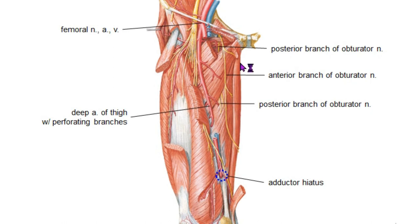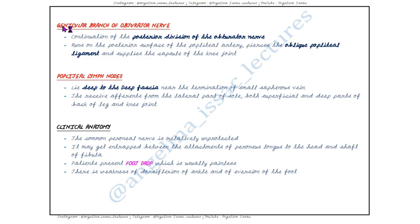The genicular branch of the obturator nerve is the continuation of the posterior division of the obturator nerve. It runs on the posterior surface of the popliteal artery, pierces the oblique popliteal ligament and supplies the capsule of the knee joint.